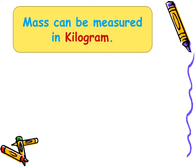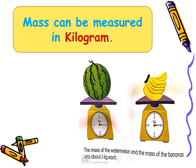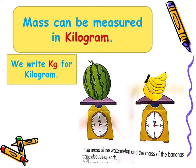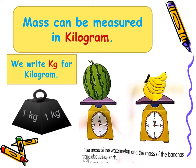Mass can be measured in kilograms. In this picture, the mass of the watermelon is about one kilogram, and the mass of the bananas is also about one kilogram. We write kg as a short form for the word kilogram, so one kg means one kilogram.